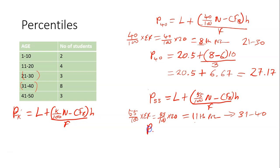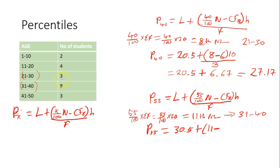To find the 55th percentile, the lower boundary of that class is 30.5. Plus 55 over 100 times N gives us 11. Minus CFB — the cumulative frequency that comes before that class: 2 plus 4 gives 6, plus 3 gives 9. Note: you don't include that particular class in the CFB. So you have 9. Times H, which is 10, divided by the frequency of that class, which is 8.